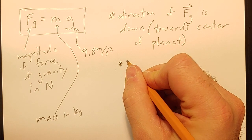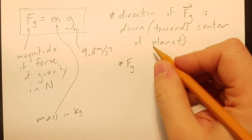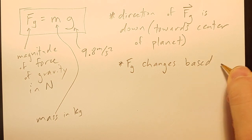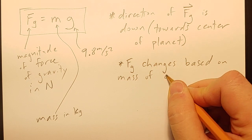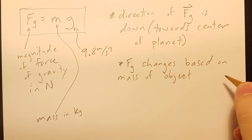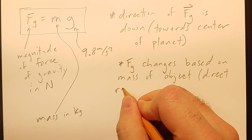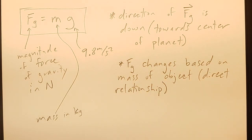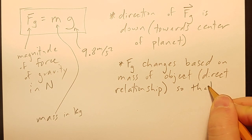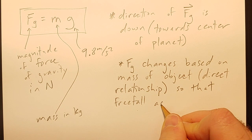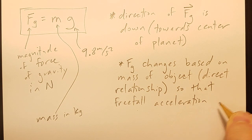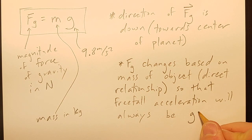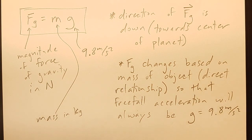And so just a little note. Fg changes based on the mass of the object. It's a direct relationship. So more mass means more force of gravity. So that, the free-fall acceleration, will always be g, 9.8 meters per second squared.